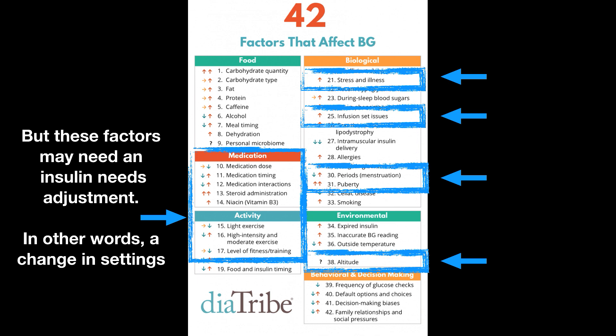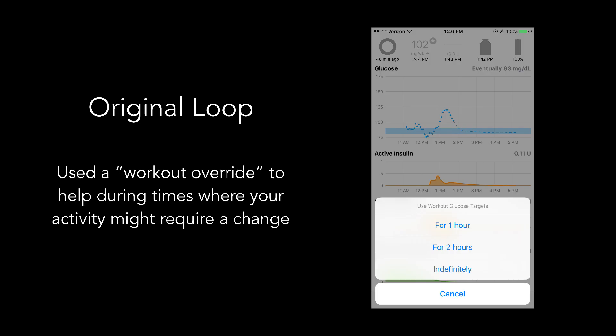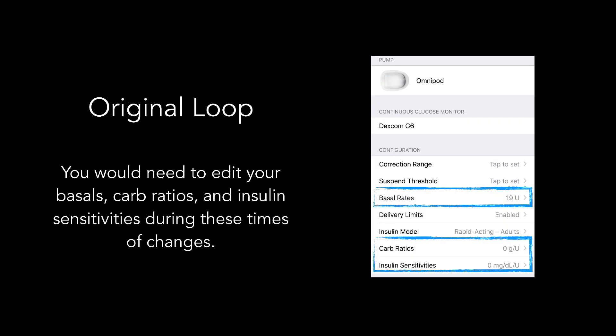It may be for a short period of time, like an intense cardio workout, or more long-term, like your monthly hormone cycles that can cause days of insulin resistance or sensitivity. Or if you've ever been on steroids, you know that you may need to double or even triple your usual insulin. The original LOOP design had one feature called a workout override to help during these times, but it was limited — it allowed you to set a different blood sugar target for a defined period of time without accounting for the fact that your underlying insulin needs were changing too. To address the whole issue, you would need to edit your basals, carb ratios, and insulin sensitivities during these times — a tedious process, especially frustrating for women managing monthly hormone changes multiple times each month.